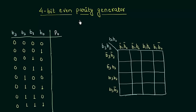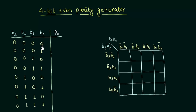In the last presentation we completed our parity — we saw the general idea of the parity and also learnt how it detects the error. In this presentation we will study about the parity generator and try to minimize the expression by using the K-map. We are going to study a 4-bit even parity generator. The parity bit is 1 when the number of 1s in the original bit is odd.